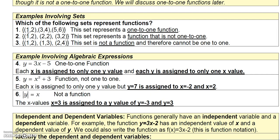Let's look at some sets. Here are three sets. The first set is a function: 1 from the domain is only assigned to 2, 3 is only assigned to 4, and 5 is only assigned to 6. Going the other way: 2 from the range is only assigned to 1, 4 is only assigned to 3, and 6 is only assigned to 5. So this is a one-to-one function.